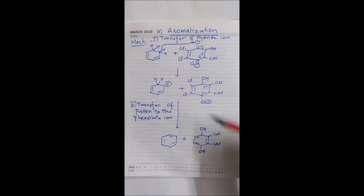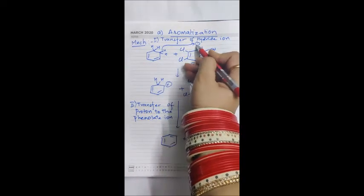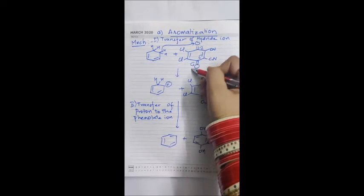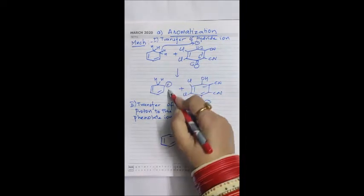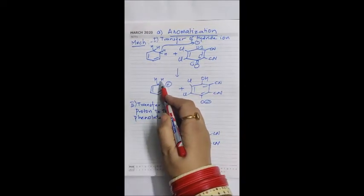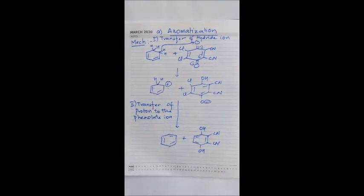In the first step, the proton shifts to the oxygen of DDQ and a cyclization of pi bonds takes place, forming a carbocation intermediate. In the second step, this proton is transferred to the O-negative, and a bond is formed. Through this procedure, we can aromatize various kinds of molecules, including macromolecules such as porphyrins.